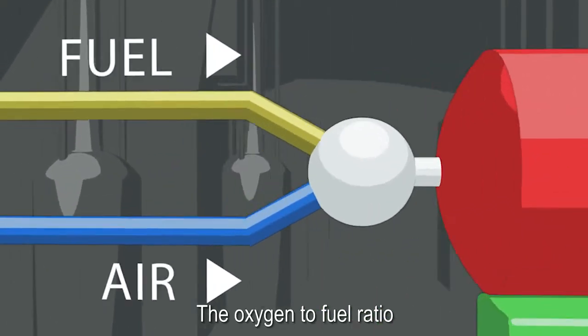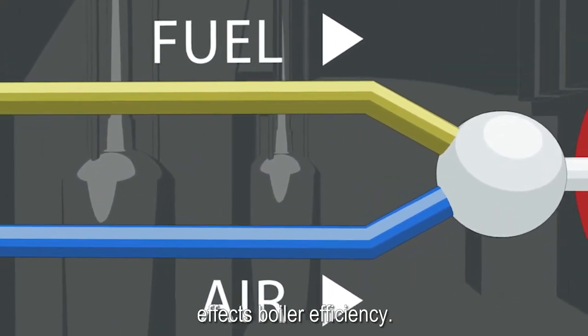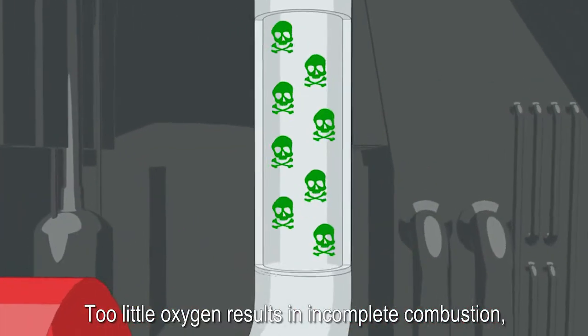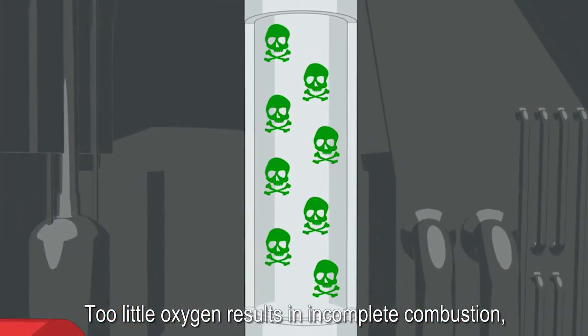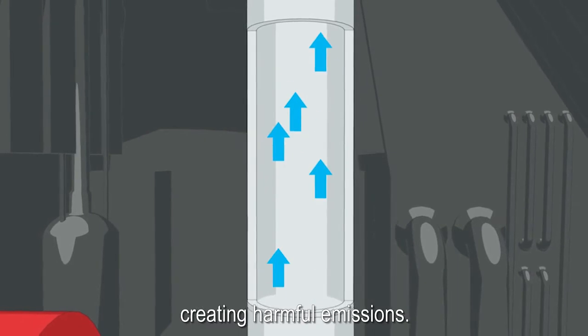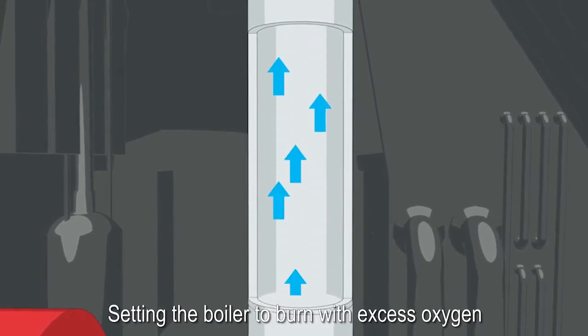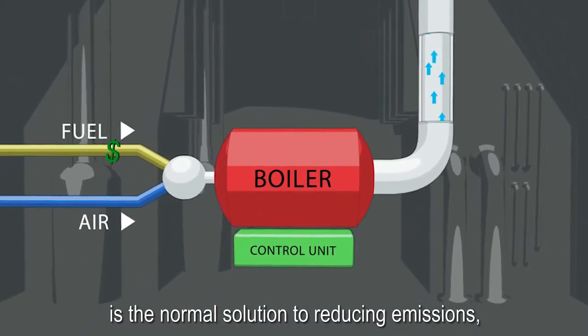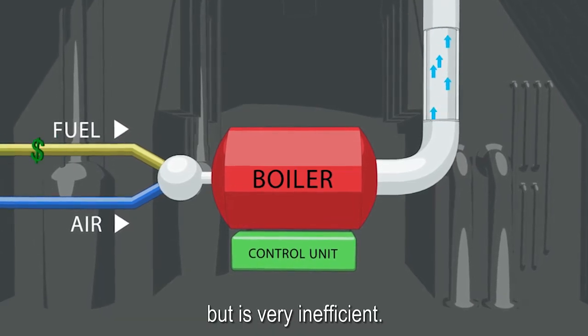The oxygen to fuel ratio affects boiler efficiency. Too little oxygen results in incomplete combustion, creating harmful emissions. Setting the boiler to burn with excess oxygen is the normal solution to reducing emissions, but is very inefficient.